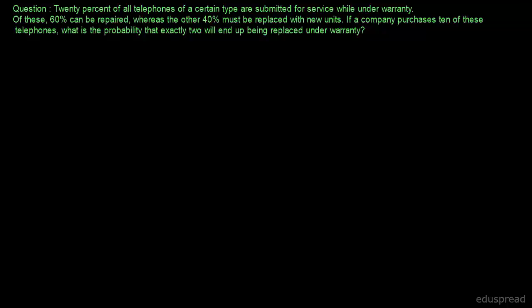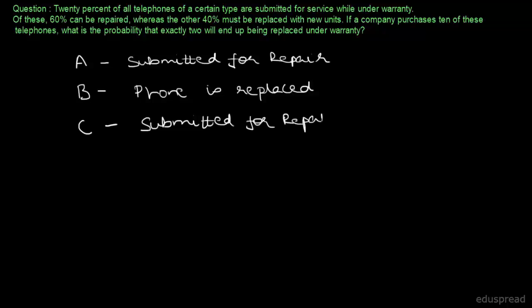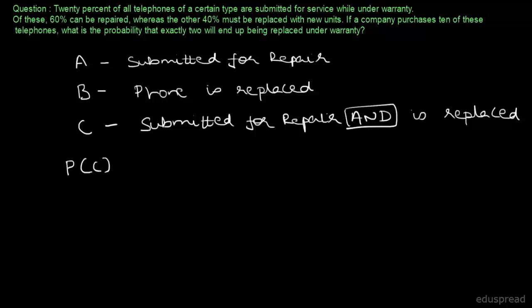As you can see, there are many events happening in this question, so let's name those events. Let A be the event that a phone is submitted for repair, and let B be the event that the phone is replaced with a new unit. Let C be the event that a phone is submitted for repair and is replaced. So the probability of C equals the probability of A intersection B.